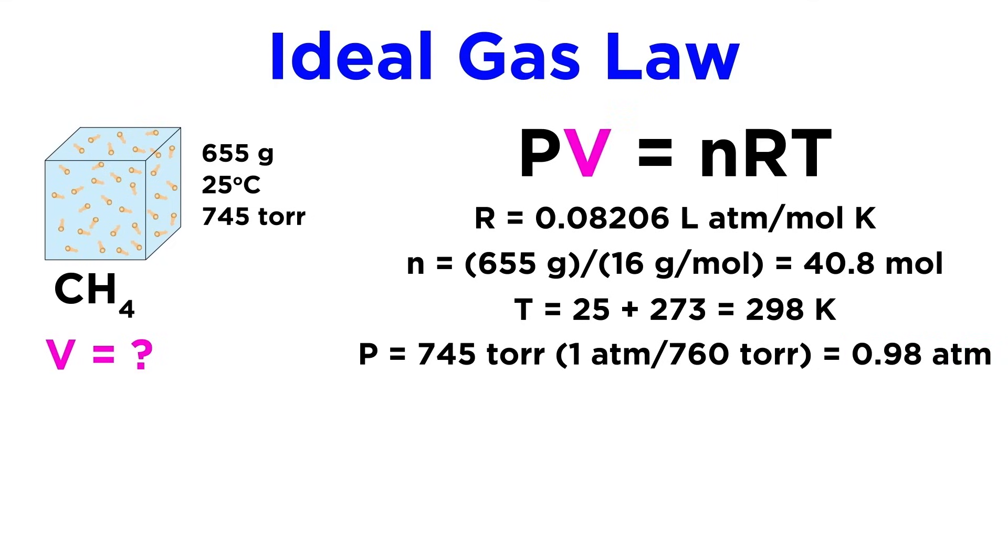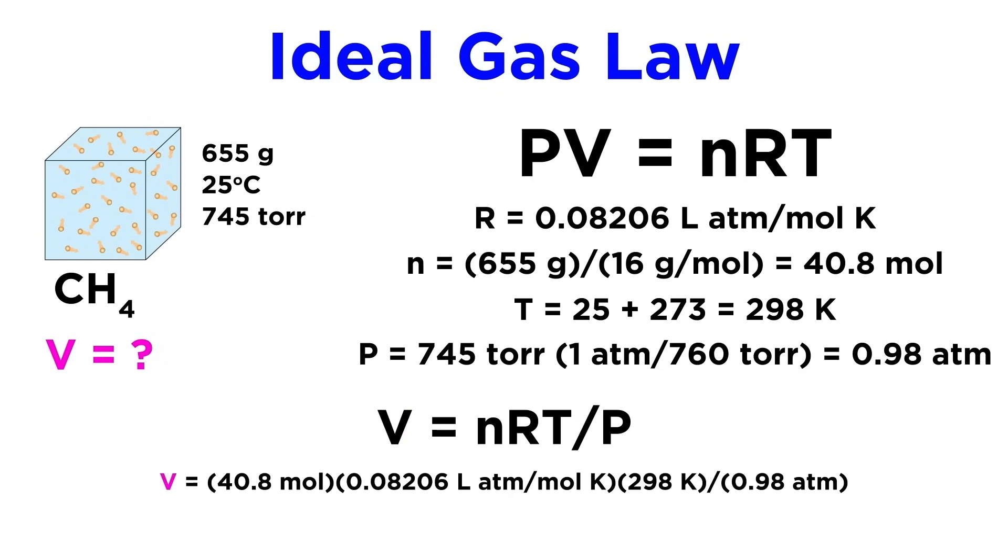Now let's rearrange the ideal gas law to solve for volume since that's what we are looking for. Then we can just plug in our values and see that all the units cancel appropriately to get an answer in liters. Now we just put the numbers into the calculator and we get 1020 liters. This is the volume that this sample of gas must occupy at this temperature and pressure.